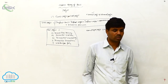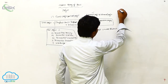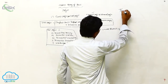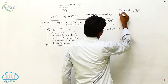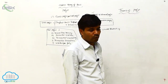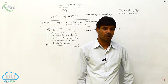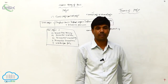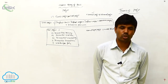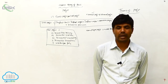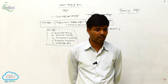Next topic is theories of profits. The theories of profit explain profit determination. We will discuss three theories of profits. The first theory is the innovation theory. It is developed by Schumpeter — Joseph Schumpeter — who explained the theory of innovation. Profit is the reward paid to the entrepreneur, and the profit arises as the difference between price and cost of production.